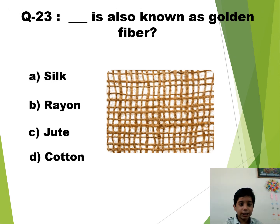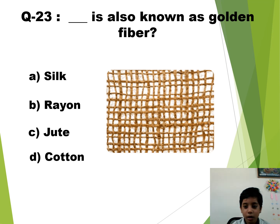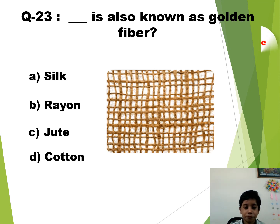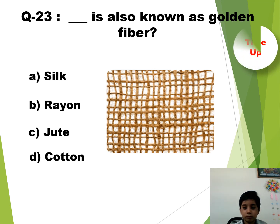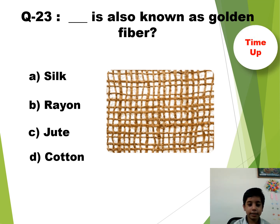Question number 23. Dash is also known as golden fiber. Your time starts now. Time up. So the answer is C — Jute.